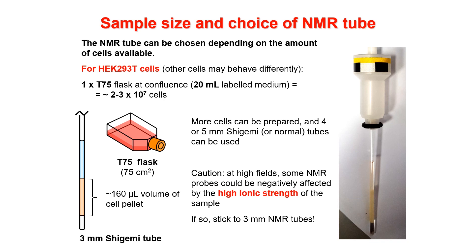Regarding sample size and NMR tube choice: I have shown this with a 3 mm tube but you could use 4 mm or 5 mm if you have a 5 mm NMR probe. That depends on how many cells you have. In our lab we use T75 flasks, which contain at confluence around 3×10⁷ cells — 30 million cells. For HEK cells that gives a pellet size perfect for a 3 mm Shigemi tube. If you had more cells and a probe that does not suffer from radiation damping due to the high ionic strength of the sample, you could also use thicker tubes like 4 or 5 mm.